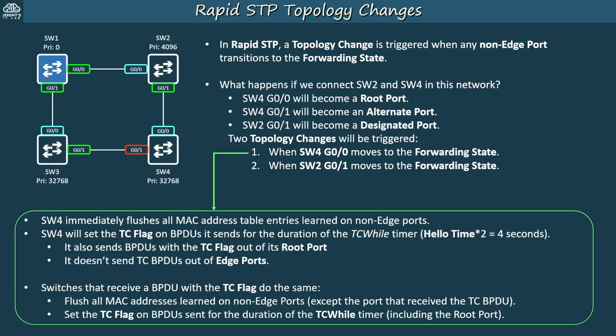For the duration of the TC while timer, switches will set the TC flag on BPDUs they send. Note that regular BPDUs without the TC flag are still sent. The TC flag is not added to BPDUs sent out of a port that received a TC BPDU. For example, when SW1 receives a TC BPDU from SW2, it starts sending TC BPDUs to SW3. However, SW1 doesn't send TC BPDUs back to SW2 — think of it like flooding a broadcast frame: the switch doesn't flood the frame back out of the port the frame was received on.